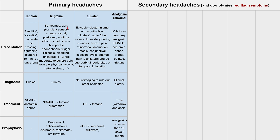The prophylaxis for migraines includes a few options. You can use beta blockers — the best one is propranolol. You can use anticonvulsants like valproate and topiramate. You can also use amitriptyline, which is a tricyclic antidepressant, though it has a bunch of side effects so it's less commonly used. Usually propranolol is preferred.